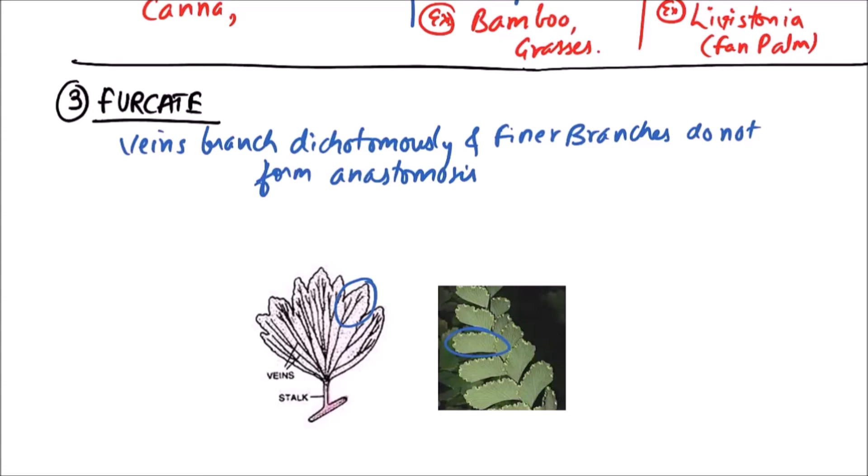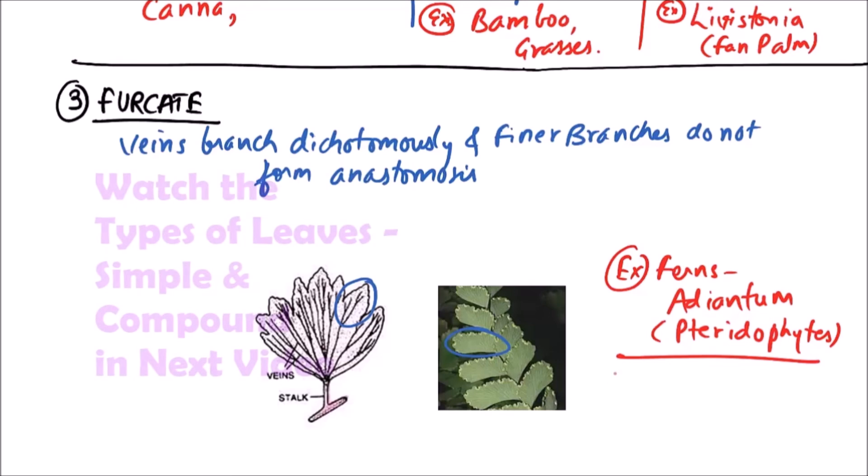This type of venation is found in ferns like Adiantum, which is a type of pteridophyte. Very few angiosperms have this type of venation.